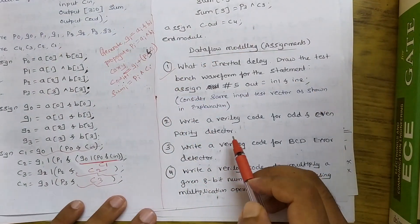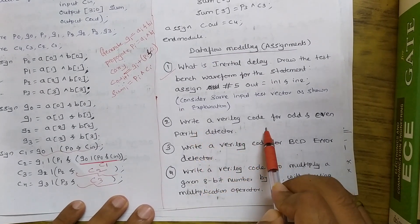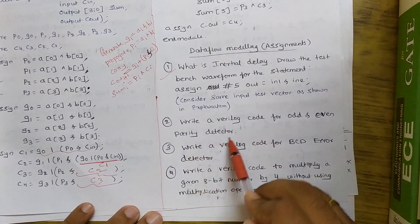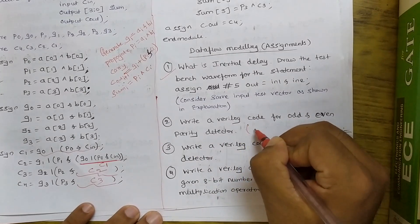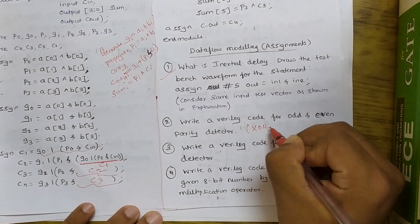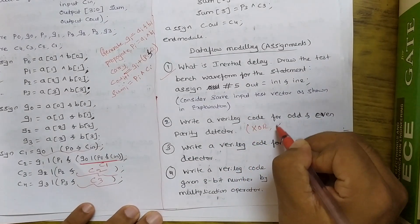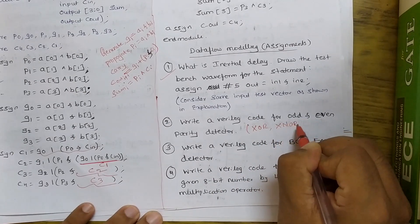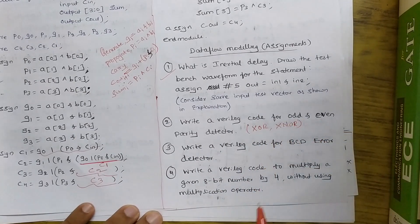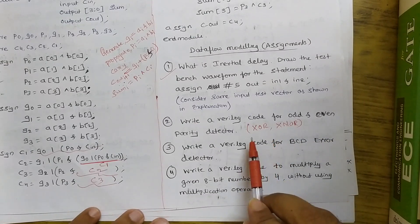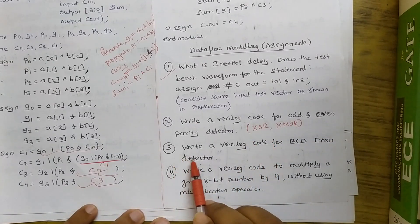Now coming to the second question. Write a Verilog code for odd and even parity detector. So for the parity detection as I had already said that you need to use XOR and XNOR. So use both and tell me what difference you get in the design.